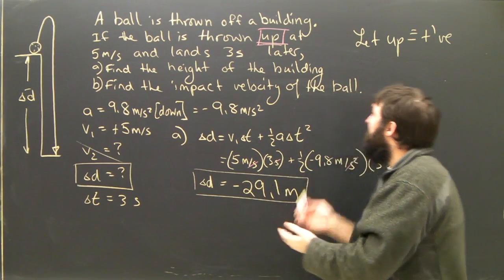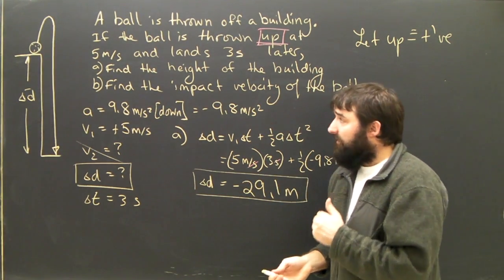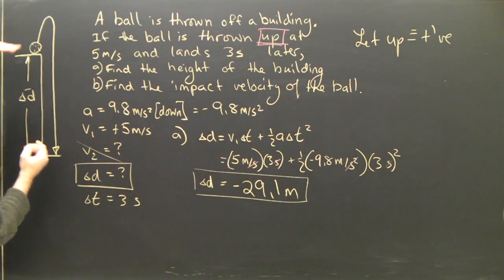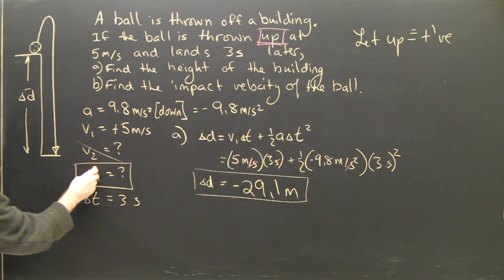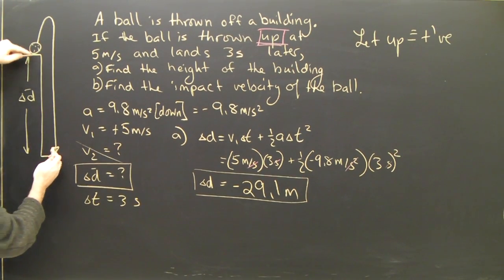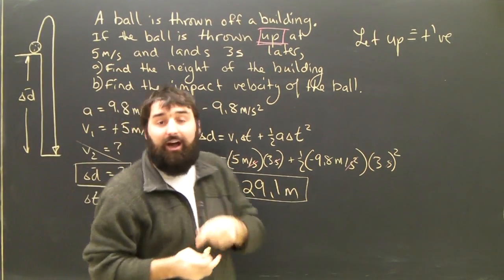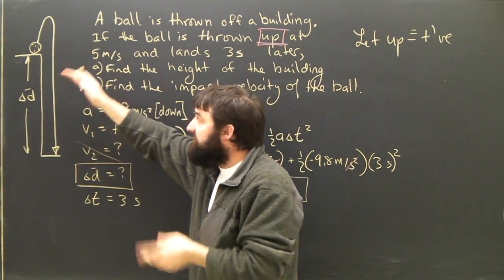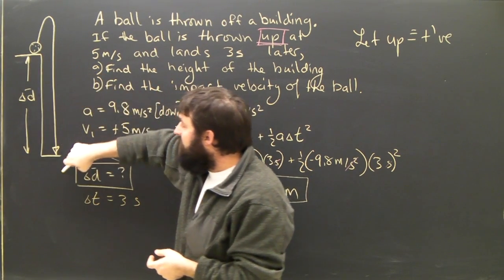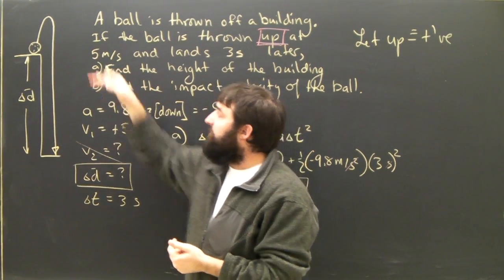Well, negative makes sense. Negative, in this case, means down. The ball started at the top of the building and ended up here. So, its displacement. Remember, this D is displacement. It's not distance. The formula has not figured out how high it goes, how far it's gone, any of those things. All it's told us is that it ended 29.1 meters below where it started.